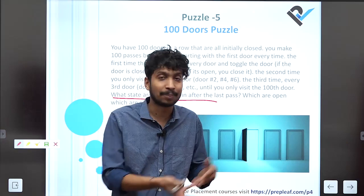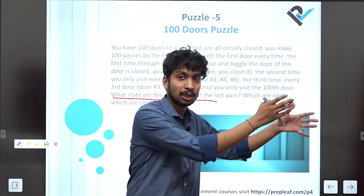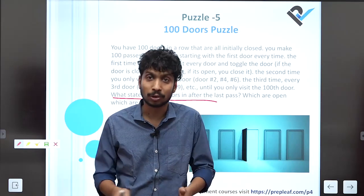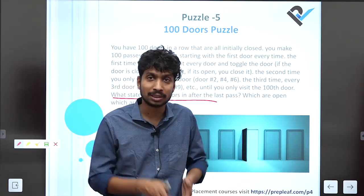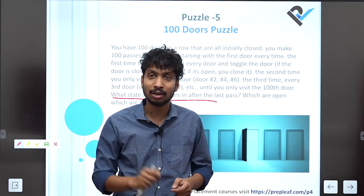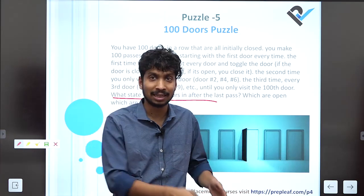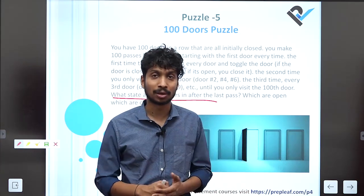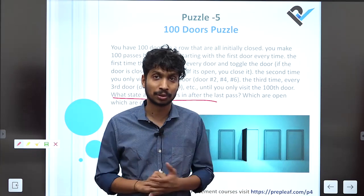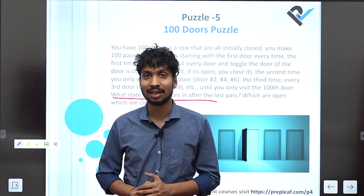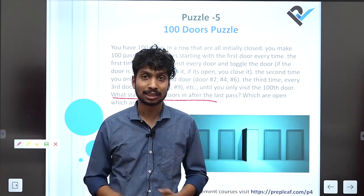Then for the third pass, I visit every third door: 3, 6, 9, and so on. In the 100-door case, we visit every third door. Then every fourth door: 4, 8, 12, 16, 20, and so on, toggling their positions. At the end, I have to tell how many doors are open and how many are closed — what is the final position of every door.